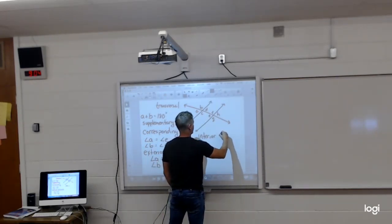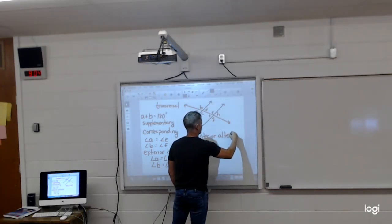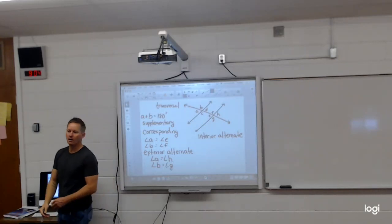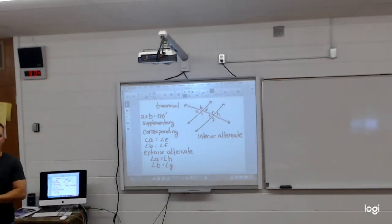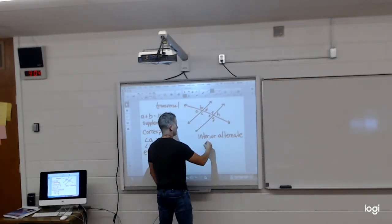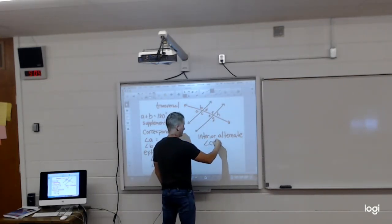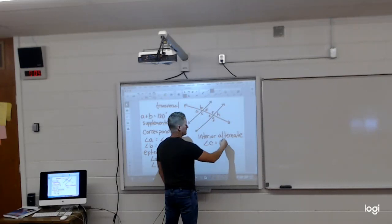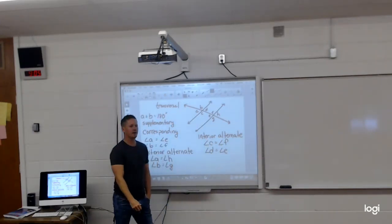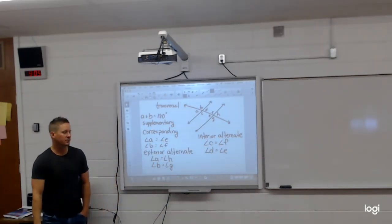So using the same thought process, I have interior alternate angles now. So what's the difference? They're inside the parallel lines. So give me the two pairs inside. C and F. Go ahead. C and F, and D and E. Those are interior alternate angles, also equal to each other.